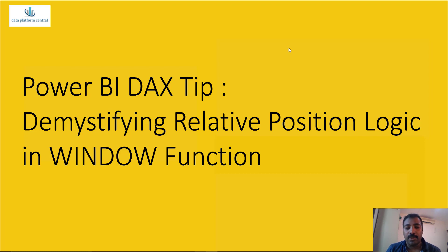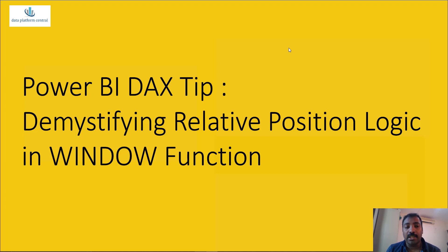Last edition we saw how we can make use of the window function which got introduced in Power BI. Now this edition we are going to extend it a bit and see how the relative position argument can be used inside your window function so as to handle a common business scenario.